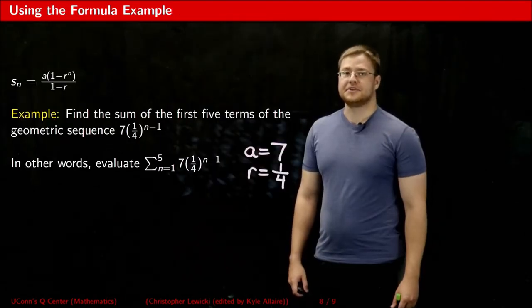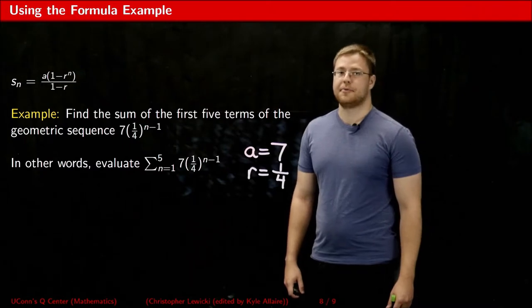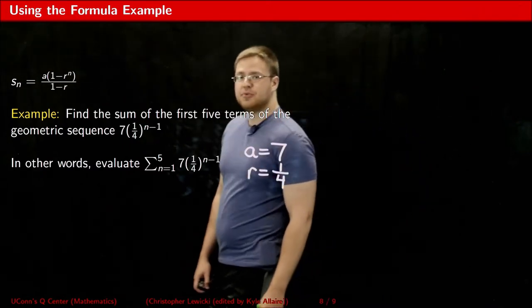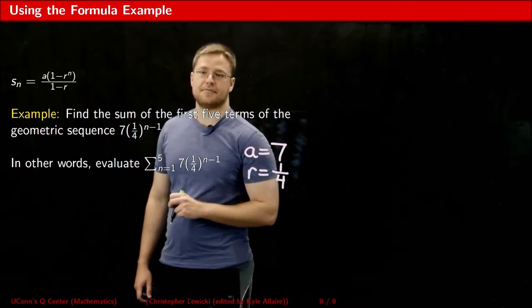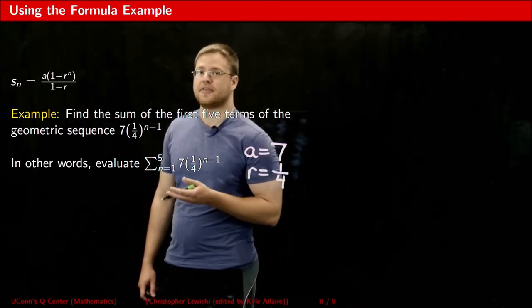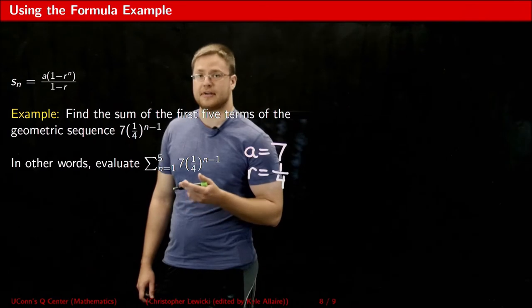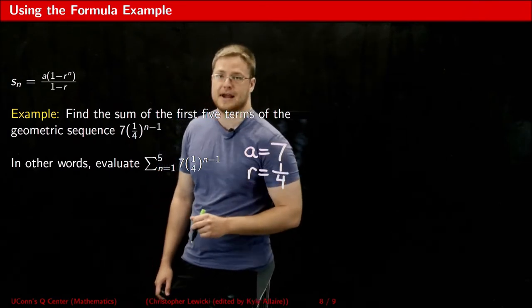Now that you've seen where the partial sum formula comes from, let's put it to use. If we were to use that formula for finding the first five terms of this sequence, we should get the same answer as what we got when we solved for it the inconvenient way, by adding up all those fractions.